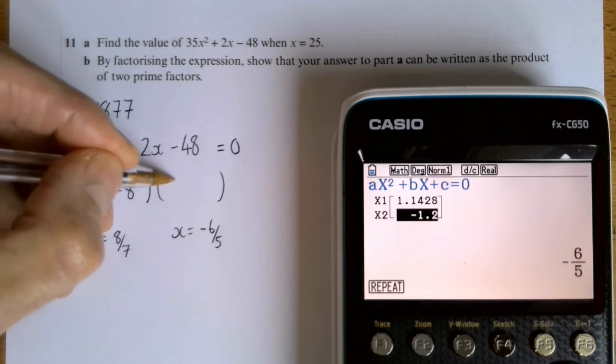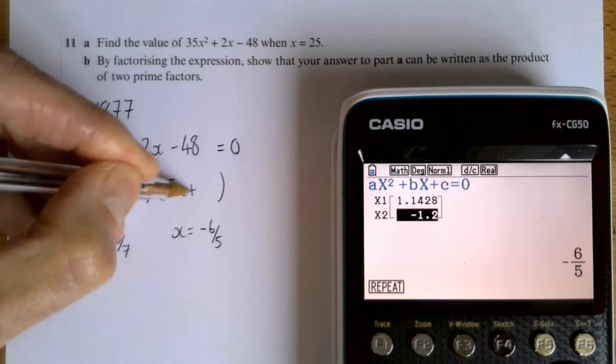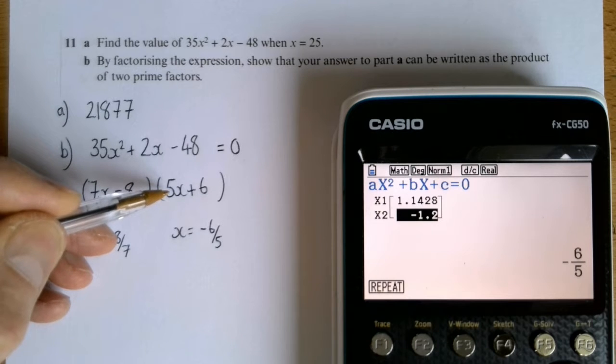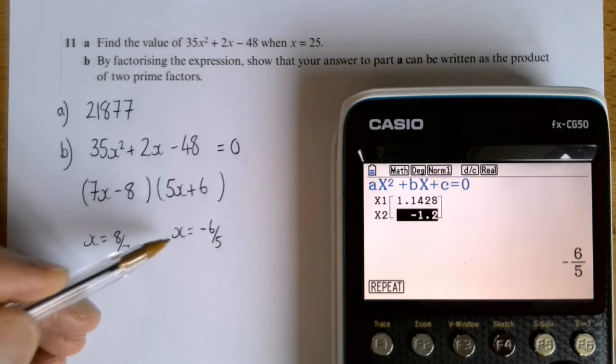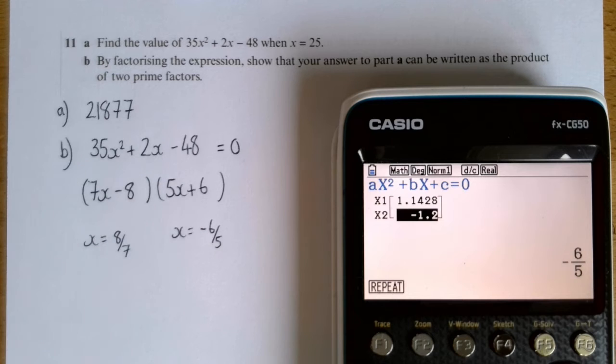And over here, hopefully you can see that's 5x plus 6, because 5x would have to be minus 6, and therefore x is minus 6 divided by 5.